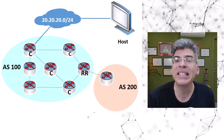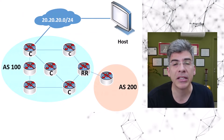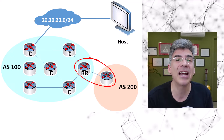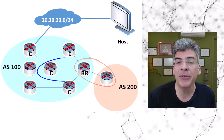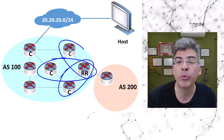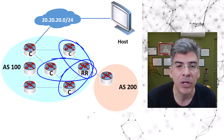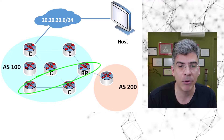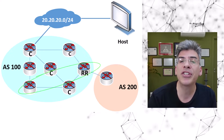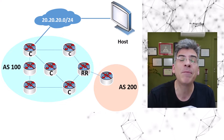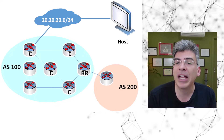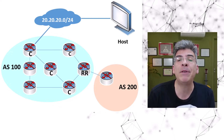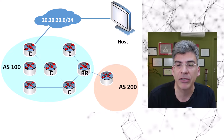A route reflector can have three types of peerings: a peering with an EBGP router that exists in another AS, a peering with an IBGP route reflector client neighbor, or a peering with an IBGP non-client neighbor. It's important to understand the roles and the types of peerings that a route reflector can have in order to start discussing how IBGP route reflectors function.